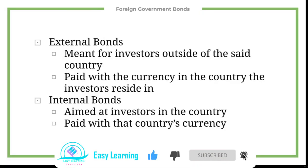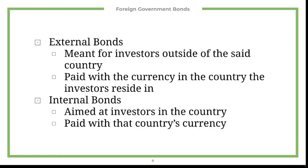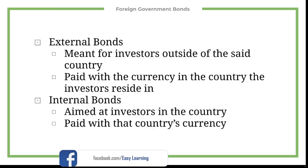The next kind of bond is foreign government bonds, and there are two different kinds. External bonds are meant for investors outside of the country, and these bonds are paid with the currency of the country that the investor resides in.